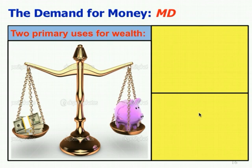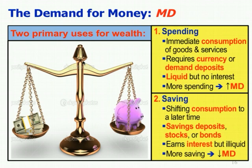To understand the demand for money, consider that we have two primary uses for your wealth: spending or savings. If you choose spending — immediate consumption of goods and services — that requires money, specifically currency or demand deposits, things you can use to pay for goods and services. These are liquid and can be converted to the medium of exchange very quickly, but they don't earn any interest. You don't earn interest on dollars sitting in your wallet.